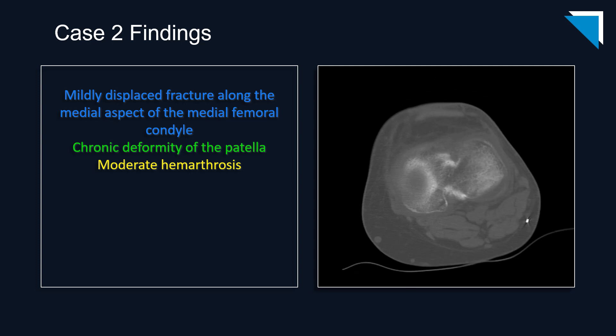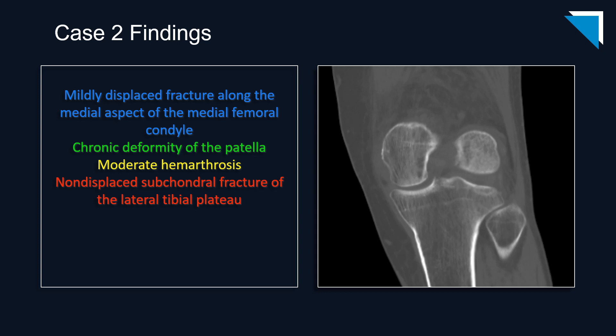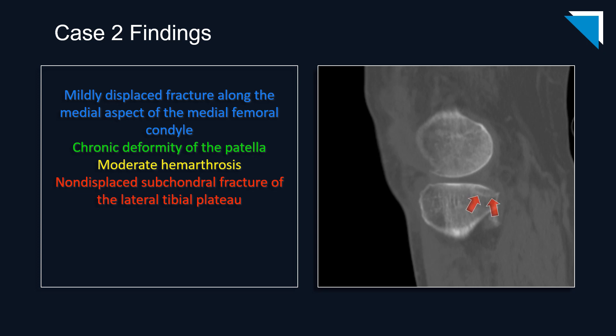If you stop there and fail to scrutinize the rest of the images, you would miss the very subtle subchondral fracture along the posterior aspect of the lateral tibial plateau. It's essentially invisible on the axial images but perhaps a little easier to see on the coronal and sagittal images. If you make your diagnosis and ask yourself before signing the report 'have I looked at everything,' you can go a long way toward avoiding these kinds of mistakes.